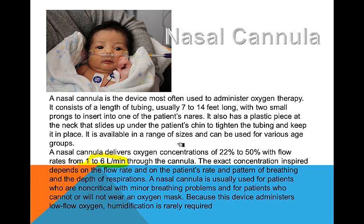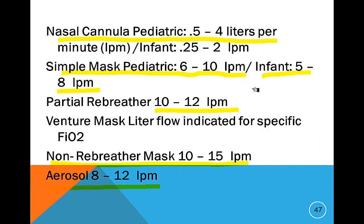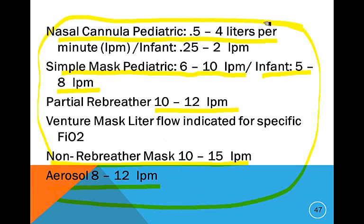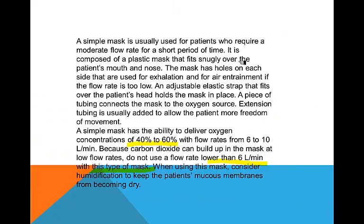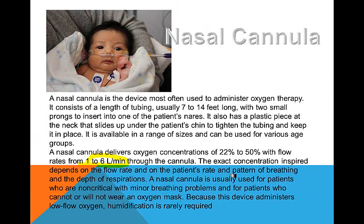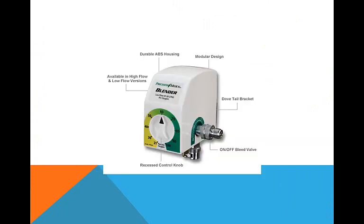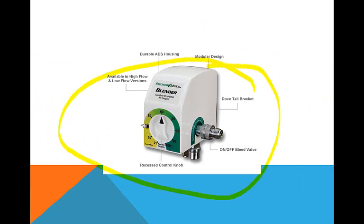For adults, nasal cannula is one to six liters. You should humidify if it's over four liters. This is a blender — it allows you to give the same flow rate but change the percent of oxygen. It's used more in the NICU to prevent retinopathy of prematurity. Same idea as a Venturi mask.